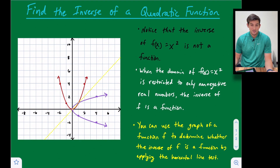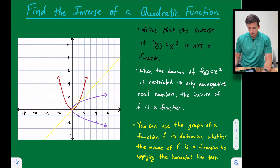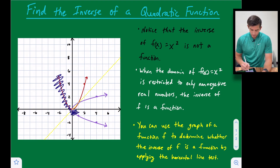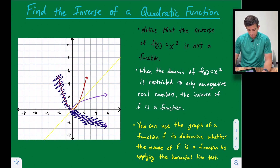So what can we do to actually find the inverse of a quadratic function? In white it says: when the domain of f(x) = x² is restricted to only non-negative real numbers, the inverse of f is also a function. Basically, that means we would be graphing only the right side of our parabola, so that when we find the inverse we only include one part of the sideways parabola — and that part would be a function.